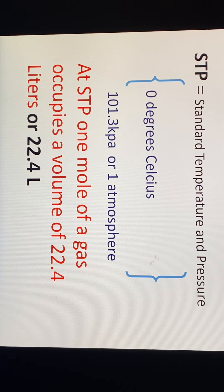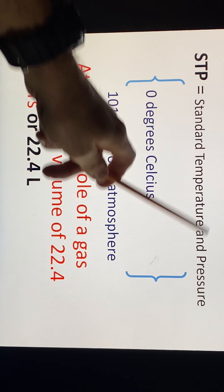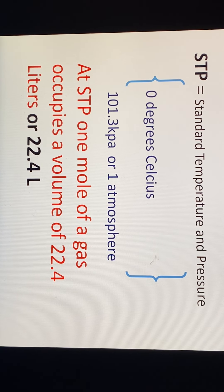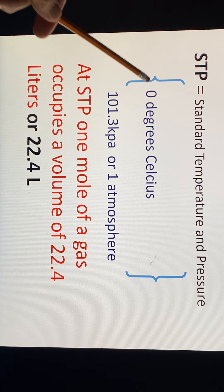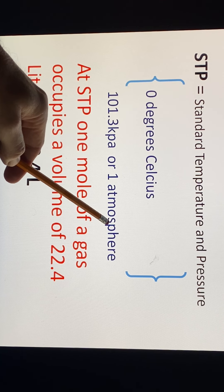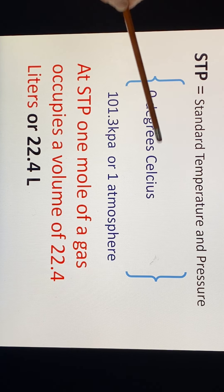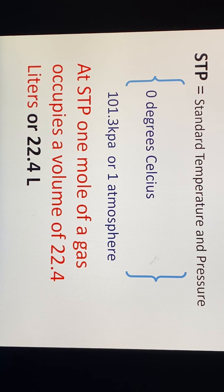This means we need to understand something called STP — S meaning standard, T meaning temperature, and P meaning pressure. Please don't get intimidated by the 0 degrees Celsius, or the 101.3 kilopascals, or 1 atmosphere. That's a pressure — you understand high pressure and low pressure. That's atmospheric pressure.